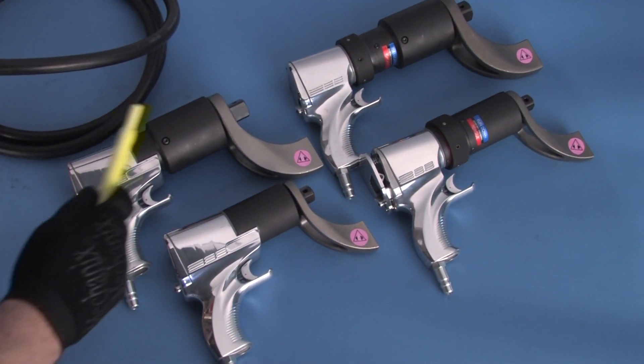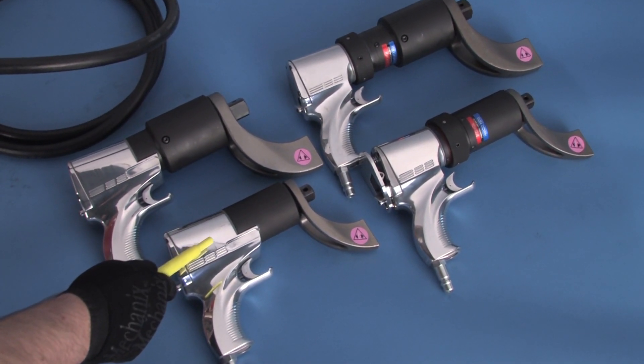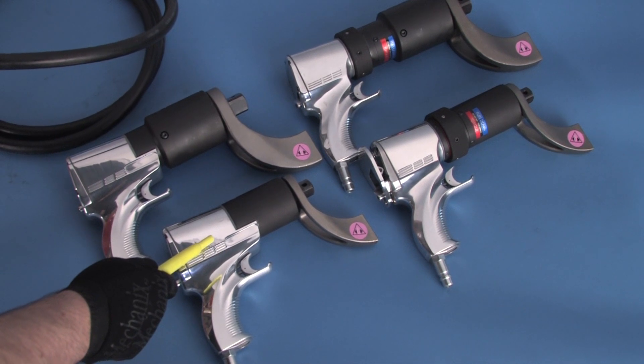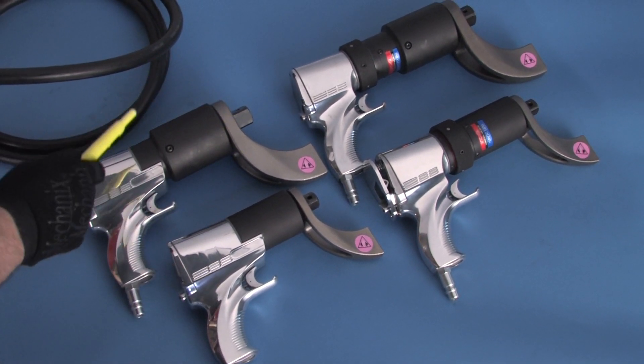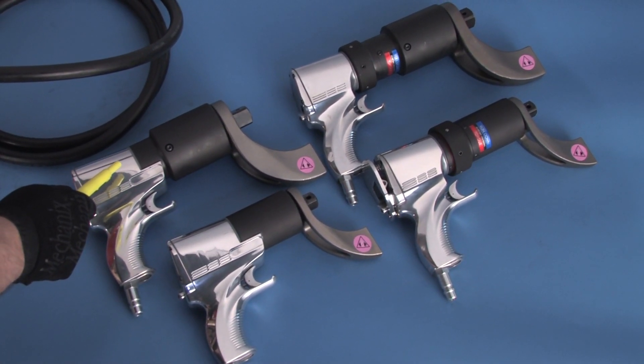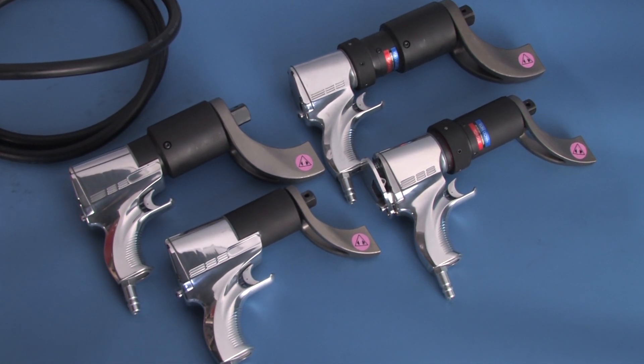For example, the J-1 will produce about a thousand foot-pounds of measured adjustable torque, while the J-3 will produce three thousand foot-pounds of torque at the same pressure.